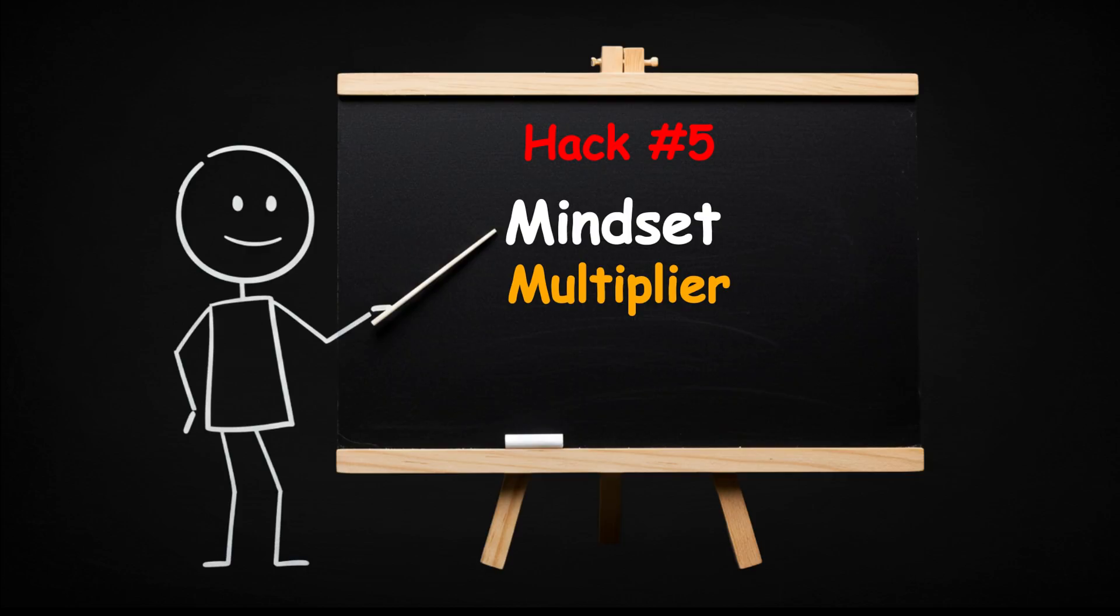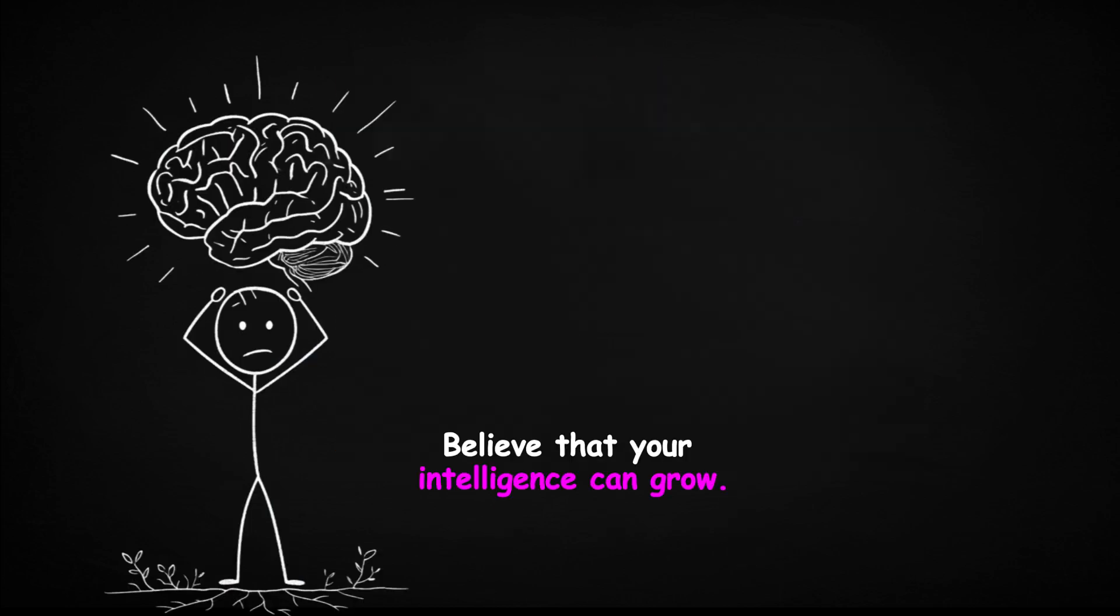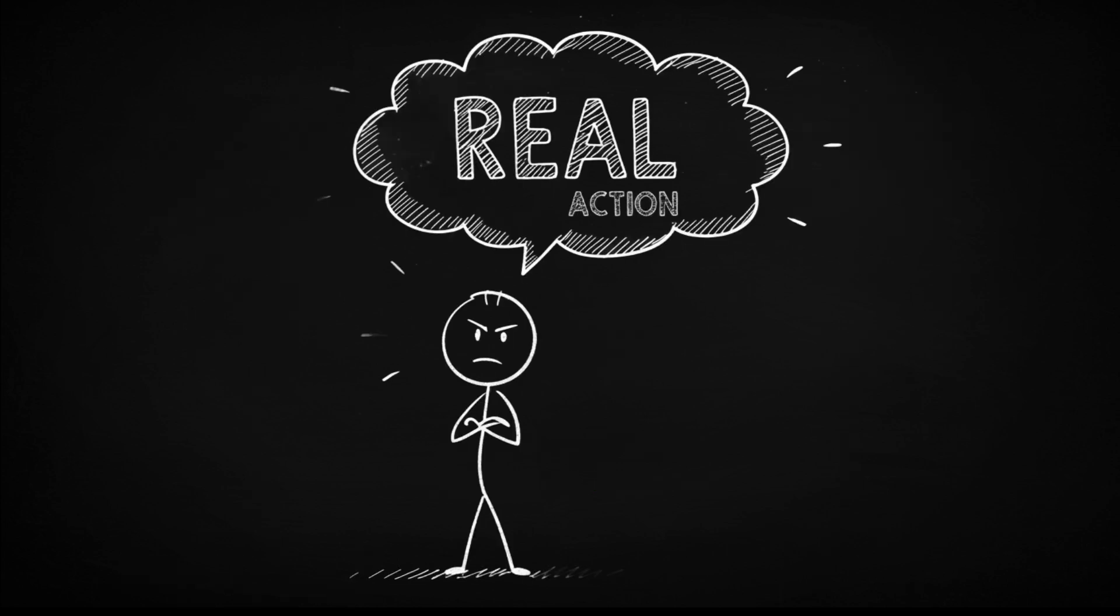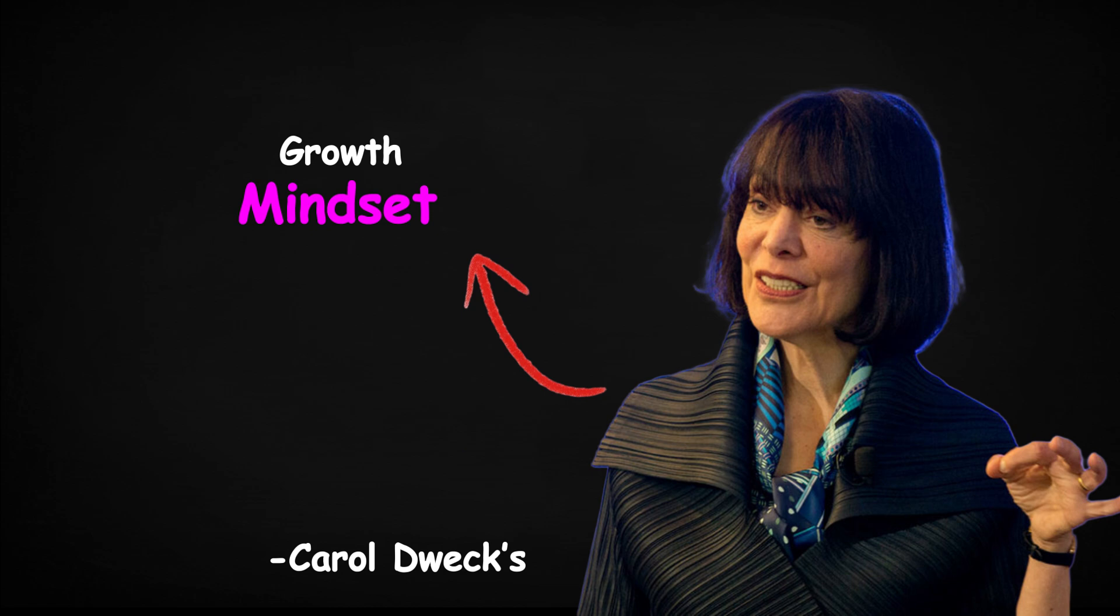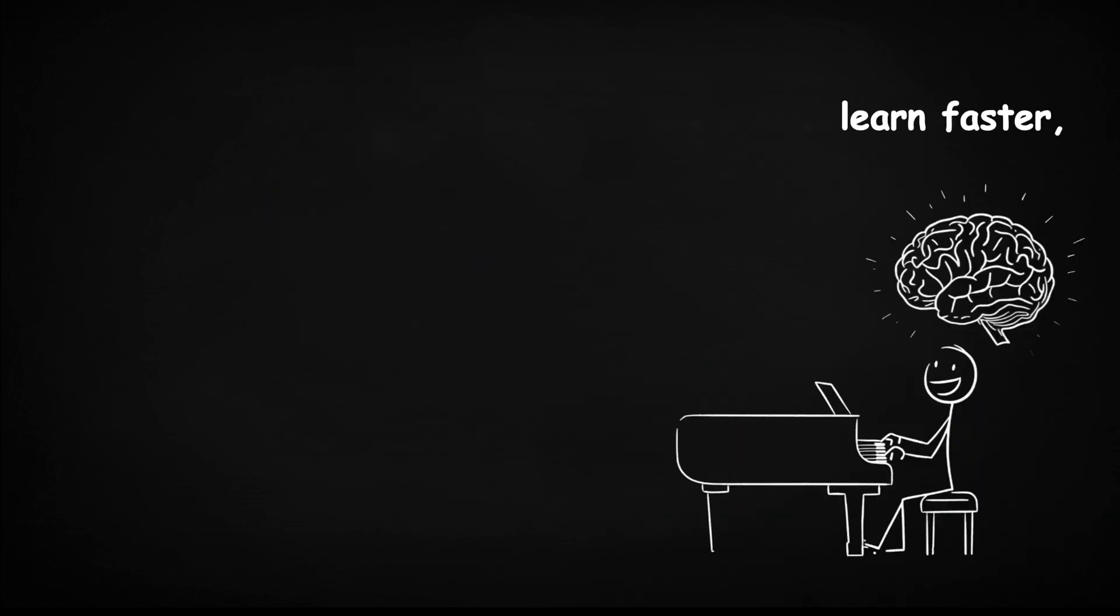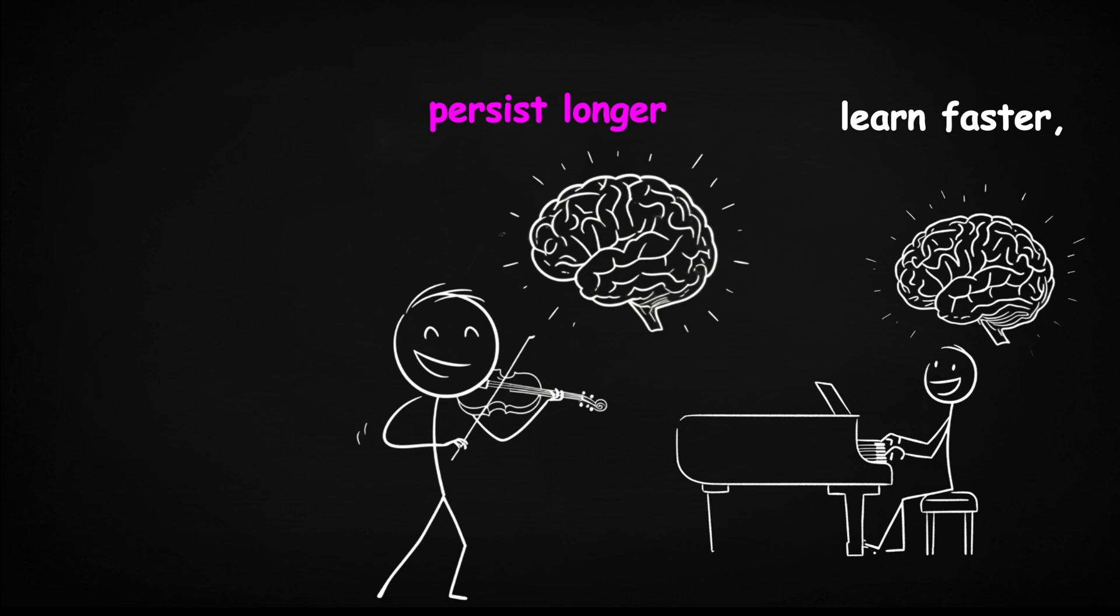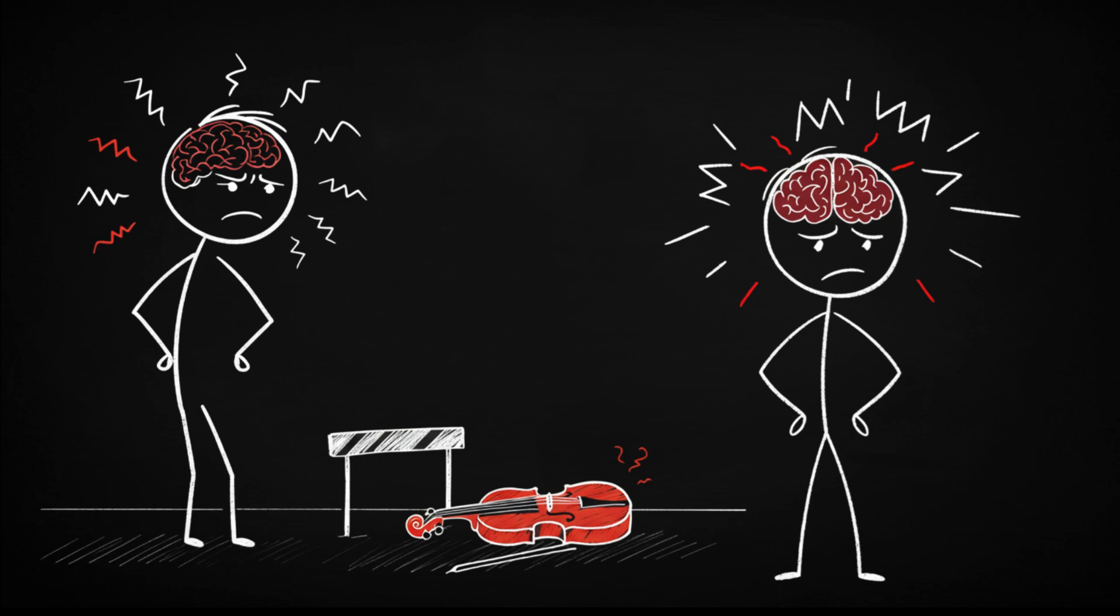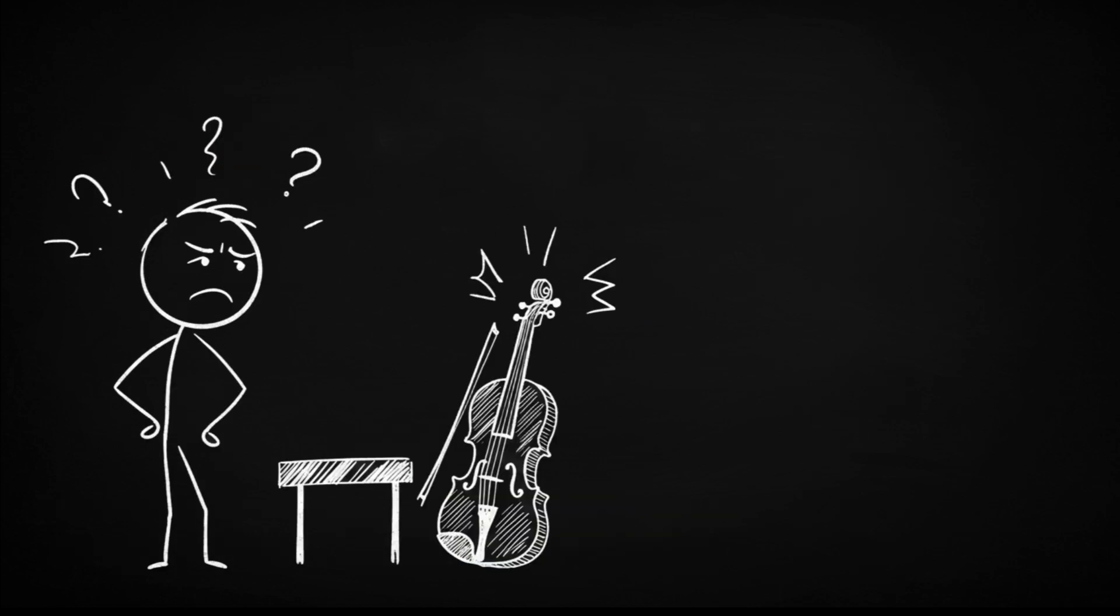Mindset multiplier. Here's the most powerful brain hack. Believe that your intelligence can grow. This isn't fluffy motivation. It's science. Stanford psychologist Carol Dweck's research shows that people with a growth mindset learn faster, persist longer, and actually become smarter over time. When you struggle, it's not a sign you're dumb. It's a signal that your brain is adapting.